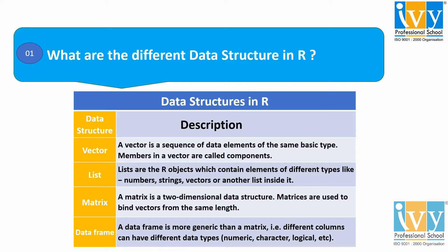A matrix is a two-dimensional data structure, also called an array with a similar data type. Matrices are used to bind vectors of the same length. A DataFrame is more generic than a matrix, as it contains different columns that can have different data types like numeric, character, logical, etc.